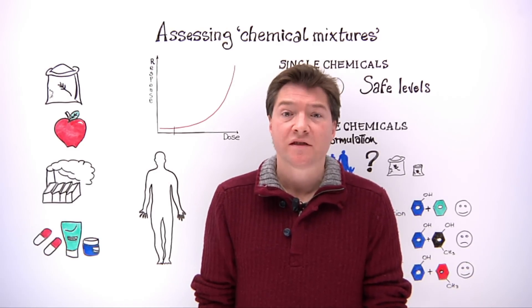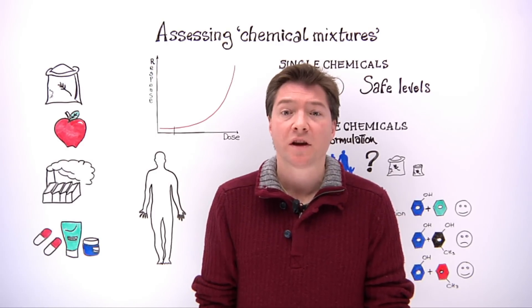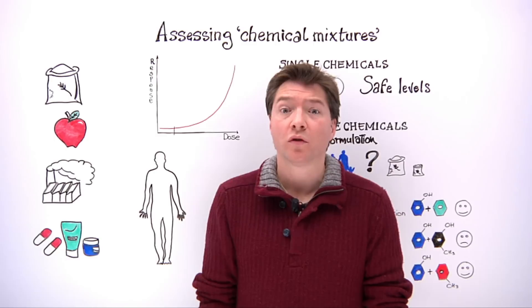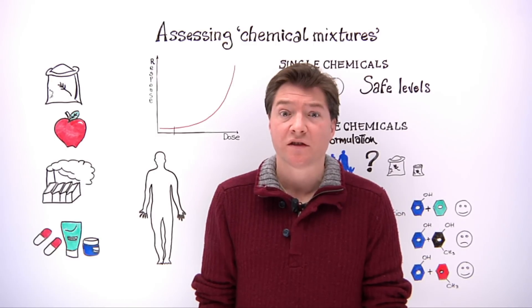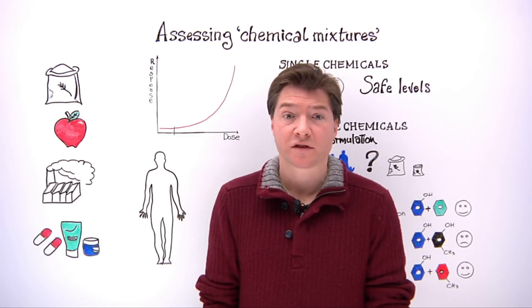So how do scientists assess consumer safety for a single chemical? For a single chemical, scientists review all the toxicological data to set a safe level of use and compare it with consumer exposure through food to conclude on any potential health risks.